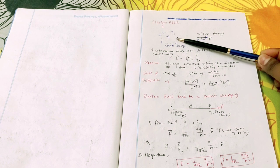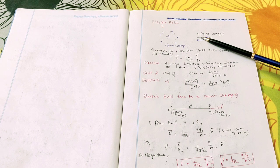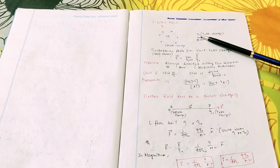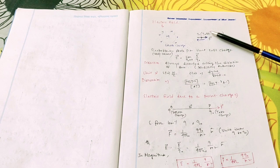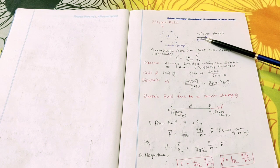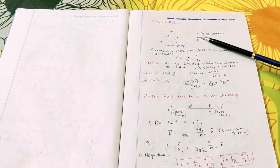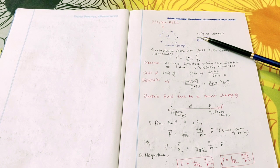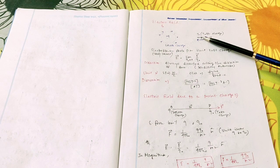To check the existence of the electric field at point P, we consider a small positive charge Q naught. Q naught should be small and it is called the test charge. If an electrostatic force is exerted on this test charge, then we can say that the electrostatic field exists at point P.